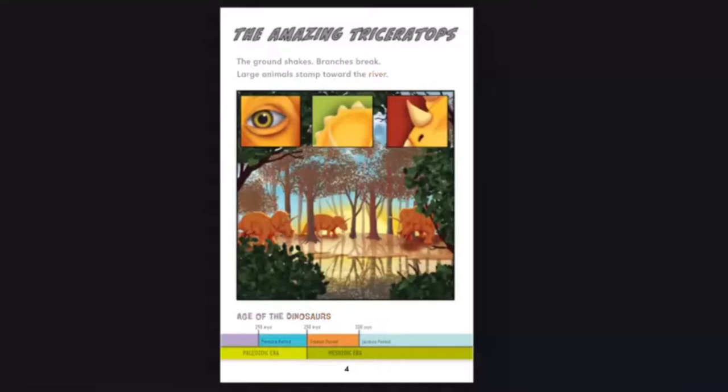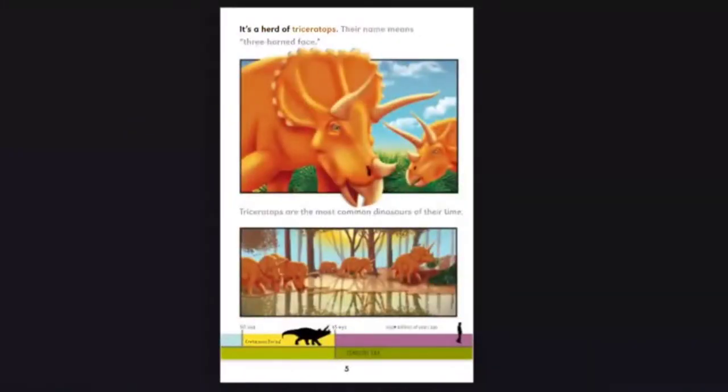Age of the Dinosaurs: Paleozoic Era, Permian Period, 298 MYA. Mesozoic Era, Triassic Period, 250 MYA. Jurassic Period, 208 MYA. It's a herd of Triceratops. Their name means Three-Horned Face. Triceratops are the most common dinosaurs of their time. Cretaceous Period, 145 MYA. Cenozoic Era, 65 MYA. MYA equals millions of years ago.